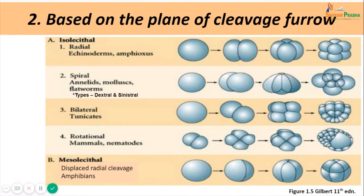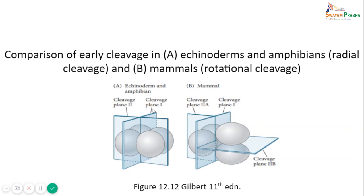This diagram shows early cleavage in radial and rotational patterns. The radial pattern seen in echinoderms and amphibians shows first and second cleavage planes both meridional and at right angles to each other. In rotational cleavage, the first cleavage is meridional, but the second cleavage differs: one blastomere divides meridionally while the second divides equatorially, demonstrating the asynchronous nature of this cleavage type.